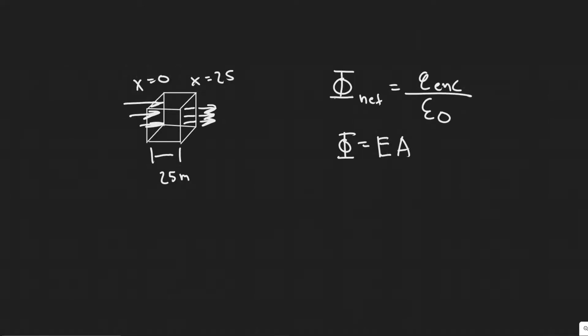In this problem, we are told that in a certain region of space, the electric field is constant in direction — horizontal in the x-direction — but its magnitude decreases from E equals 560 N per Coulomb at x equals 0, to E equals 410 N per Coulomb at x equals 25 meters. We need to determine the charge within a cubic box of side L equals 25 meters, where the box is oriented so that four of its sides are parallel to the field lines.